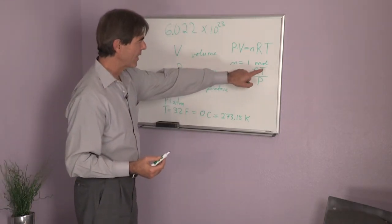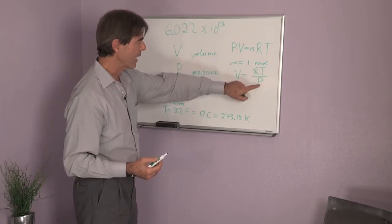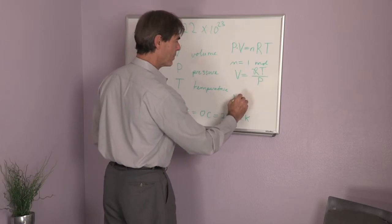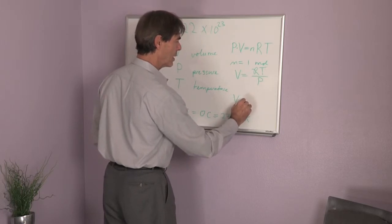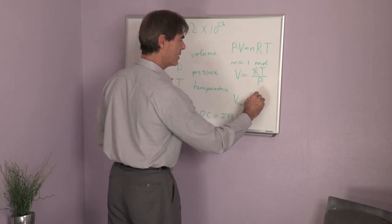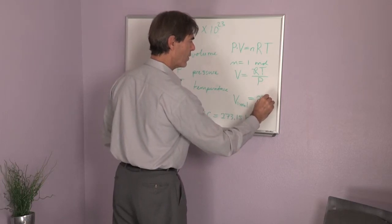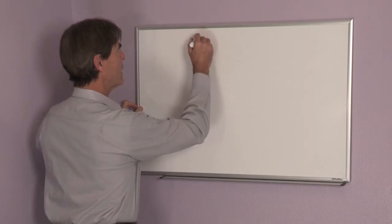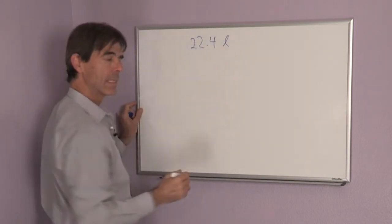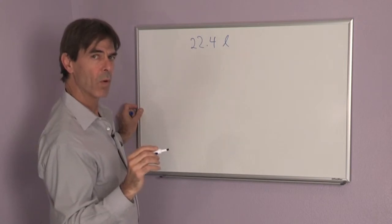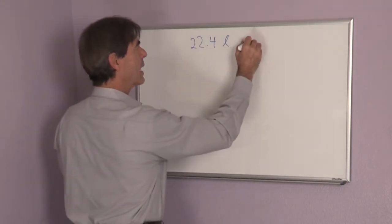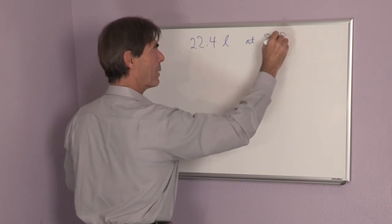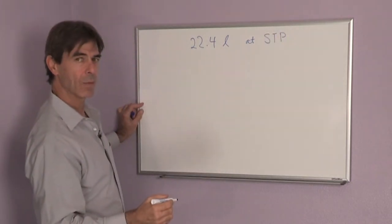In that case, if I have that temperature and that pressure, the volume of one mole is 22.4 liters. So let me remind you, 22.4 liters is the volume of one mole of gas at standard temperature and pressure. STP is what this is called.